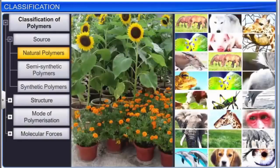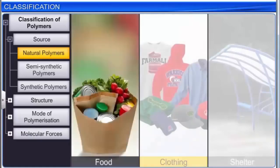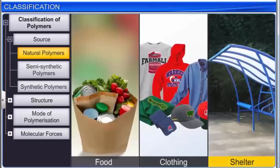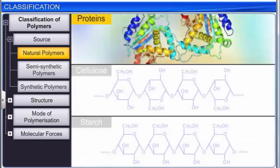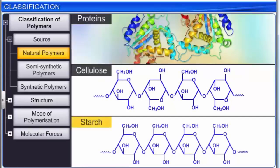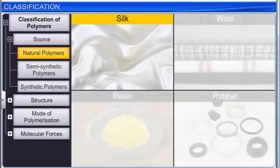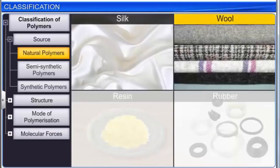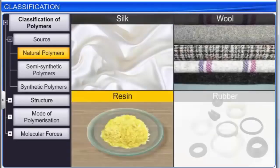Natural polymers are found in plants and animals. They provide much of our food, clothing, and shelter. Examples are proteins, cellulose, starch, silk, wool, resin, and rubber.